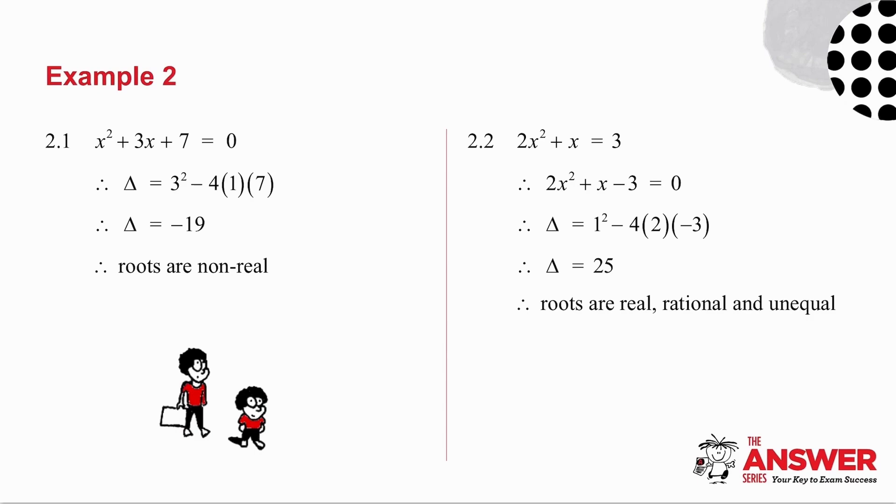They said without solving the equation, so all I need to do is look at delta. Remember delta is b² - 4ac. If I work out delta in the first example, I get that delta is -19. And remember that list that we went through: is delta greater than or equal to 0, or is it less than 0? It's less than 0, which means my roots are non-real.